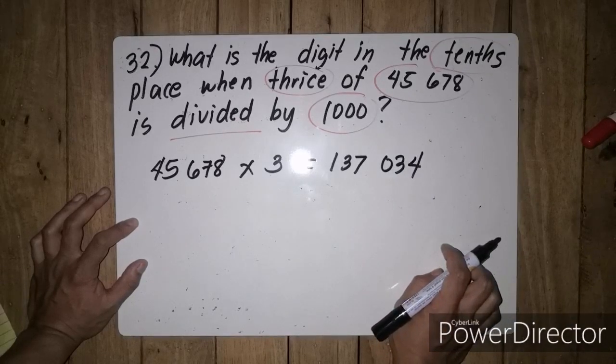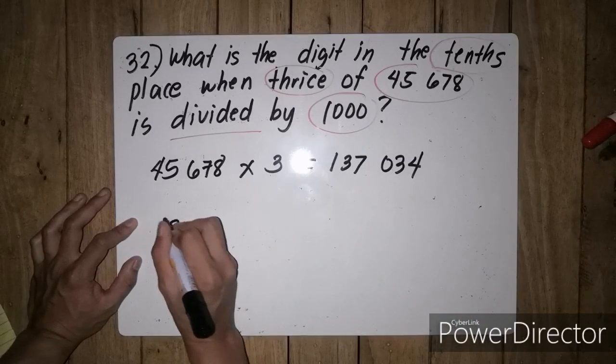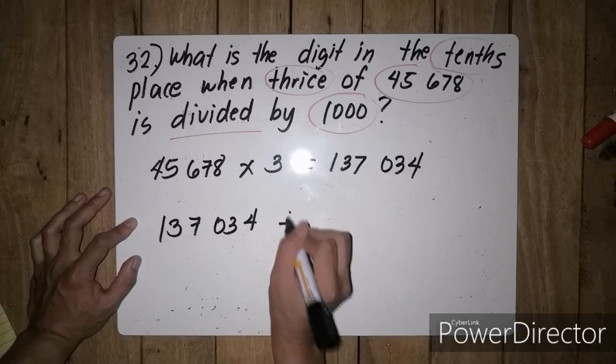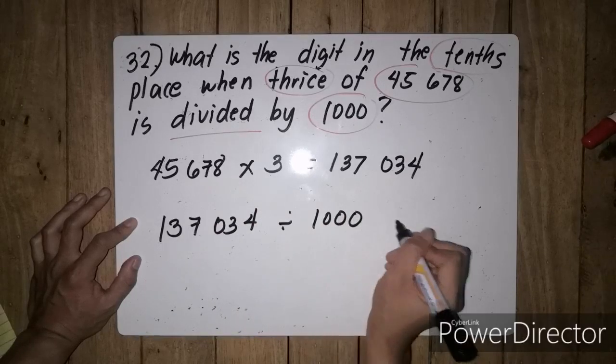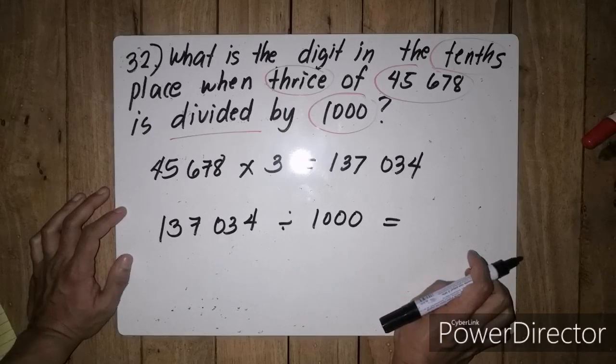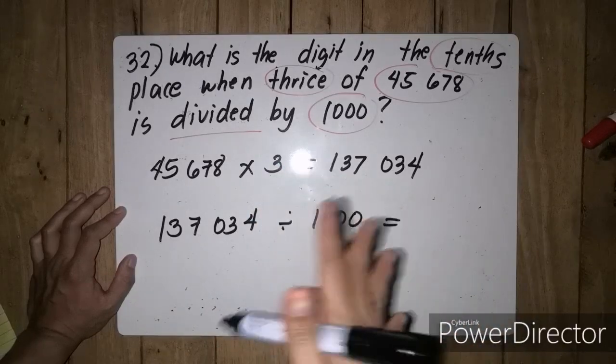We are going to divide 137,034 by 1000. So ang clue dito, kung ilan yung zeros niya, ganun kayo karaming beses magmove from doon sa decimal point up to the left.